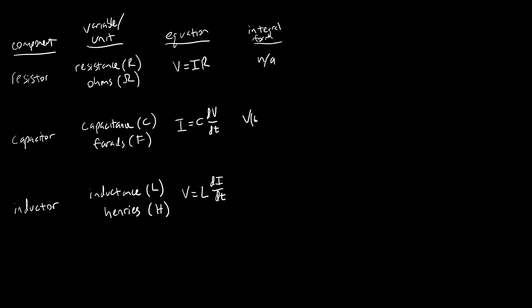For the capacitor we can write it as voltage as a function of time equals 1 over C integral T0 to T, V of T prime dt plus V0.